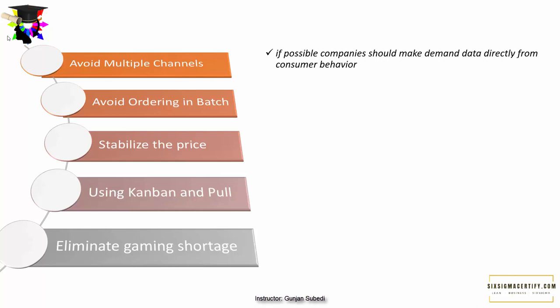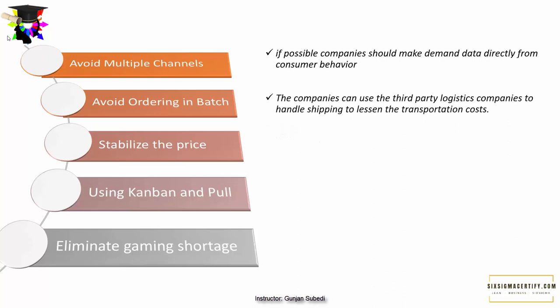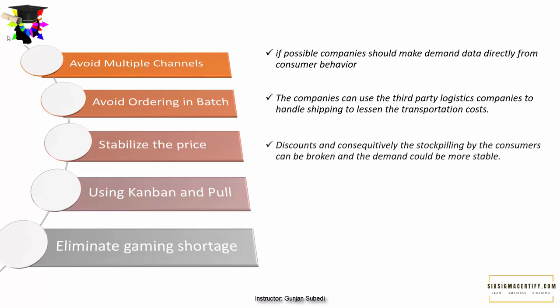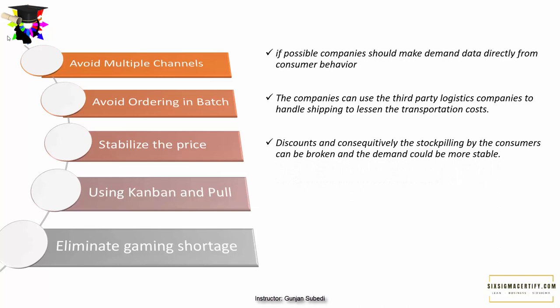The second solution is to avoid ordering in batches as far as possible. Companies can use third-party logistics providers to handle shipping and reduce transportation costs, since the high cost of shipping is typically why companies order in large batches. The third solution is to stabilize prices, so that discounts and consequently stockpiling by consumers can be reduced, making demand more stable.